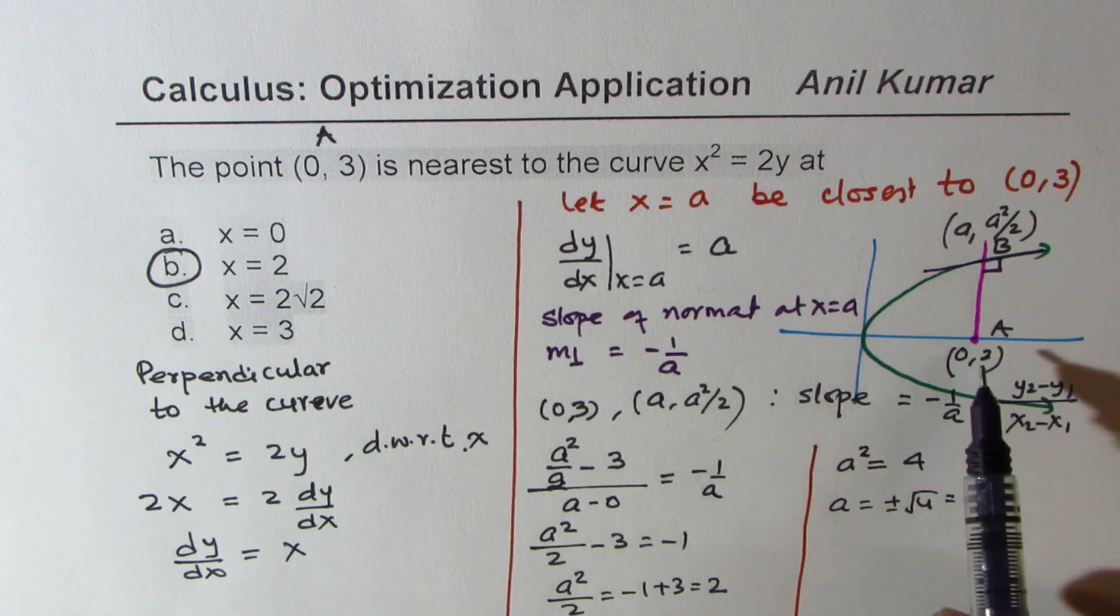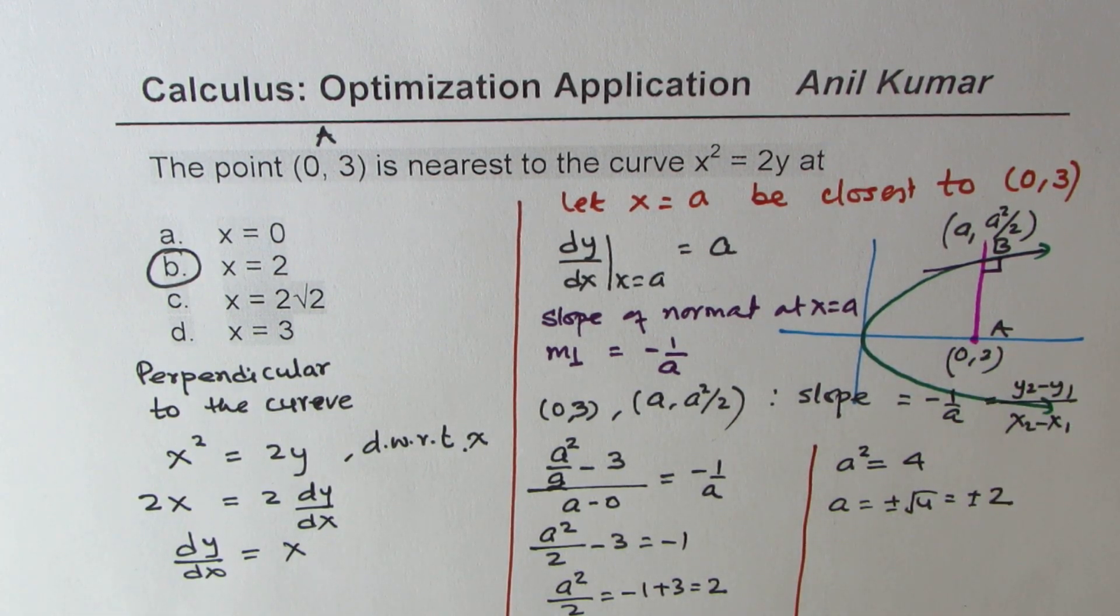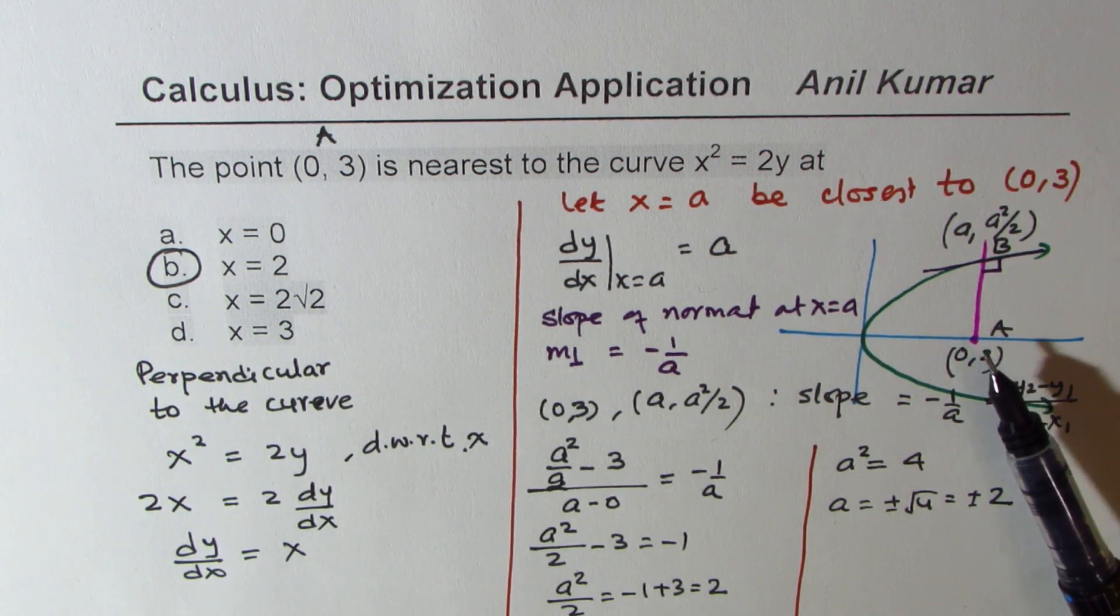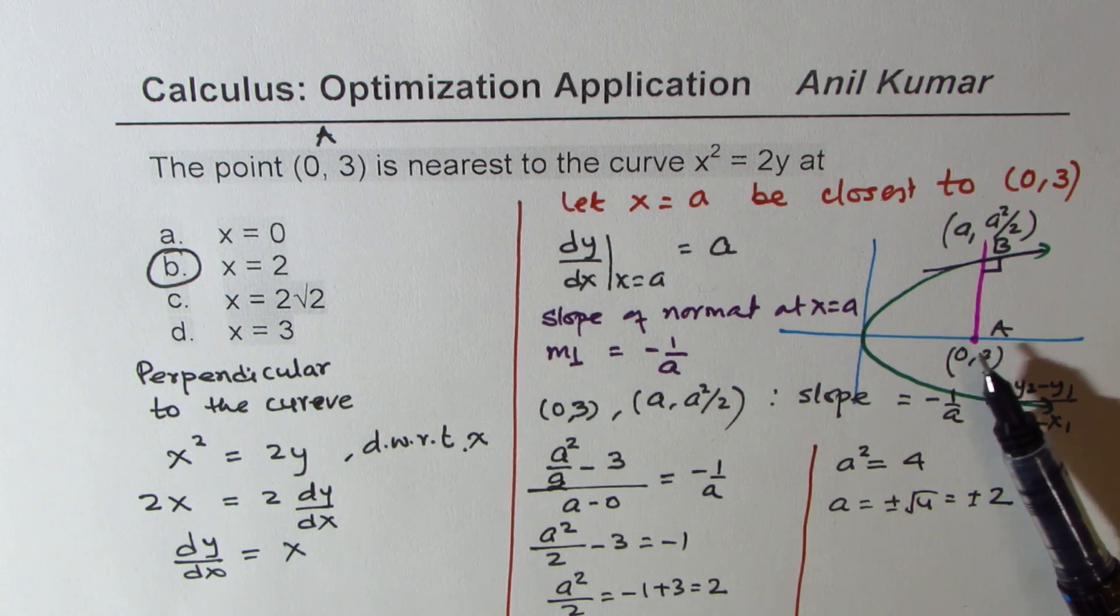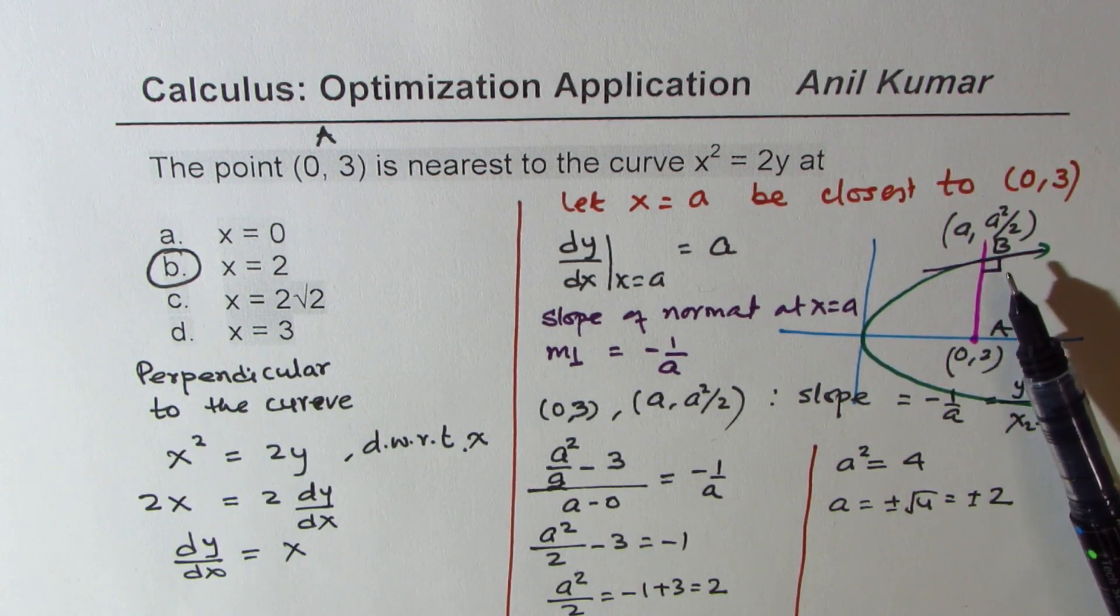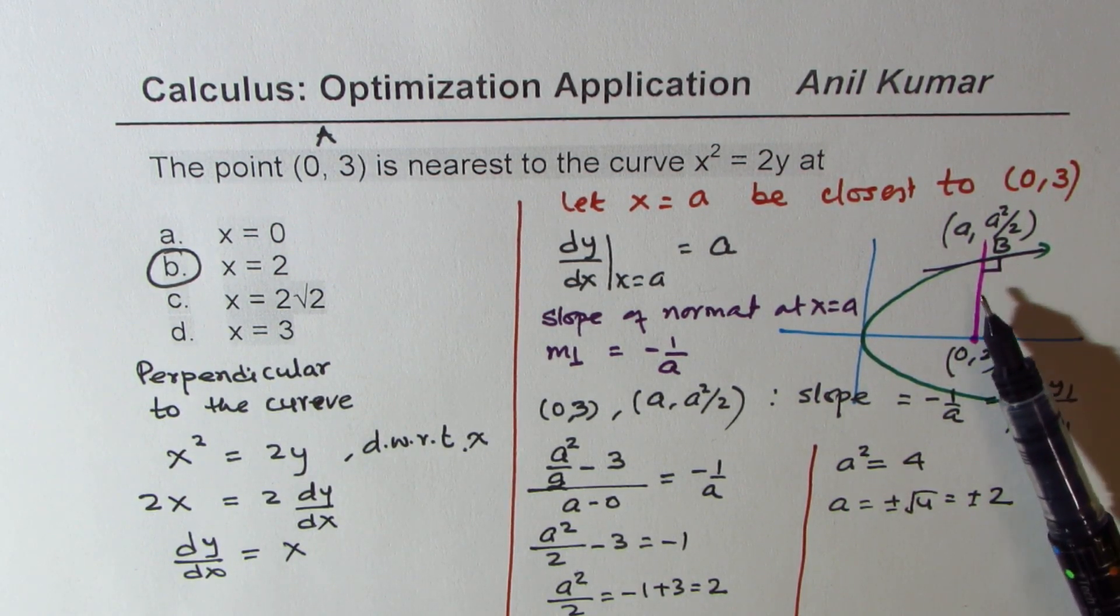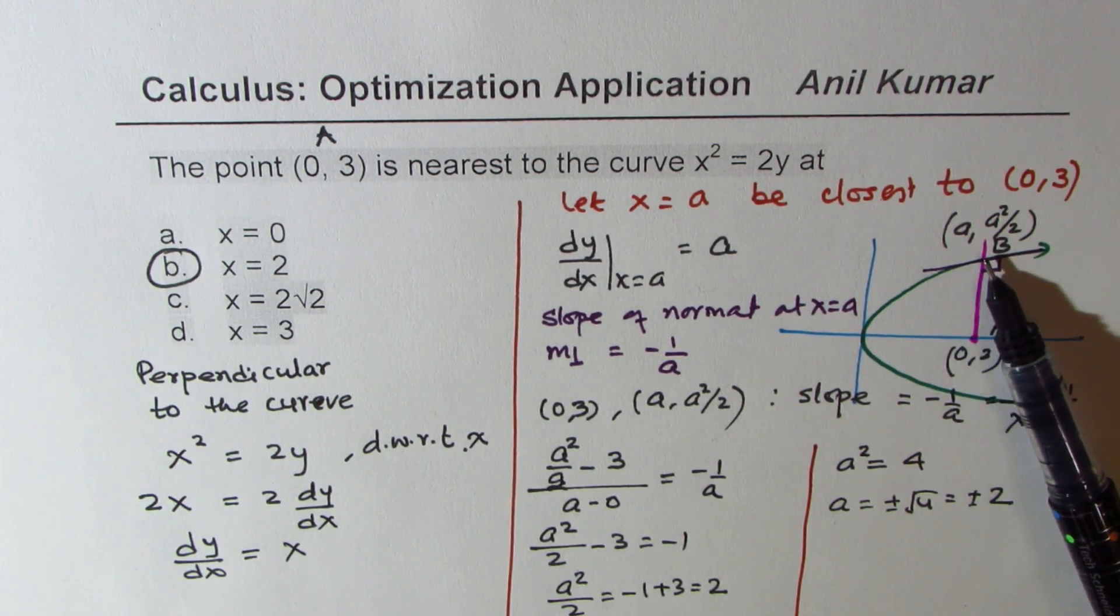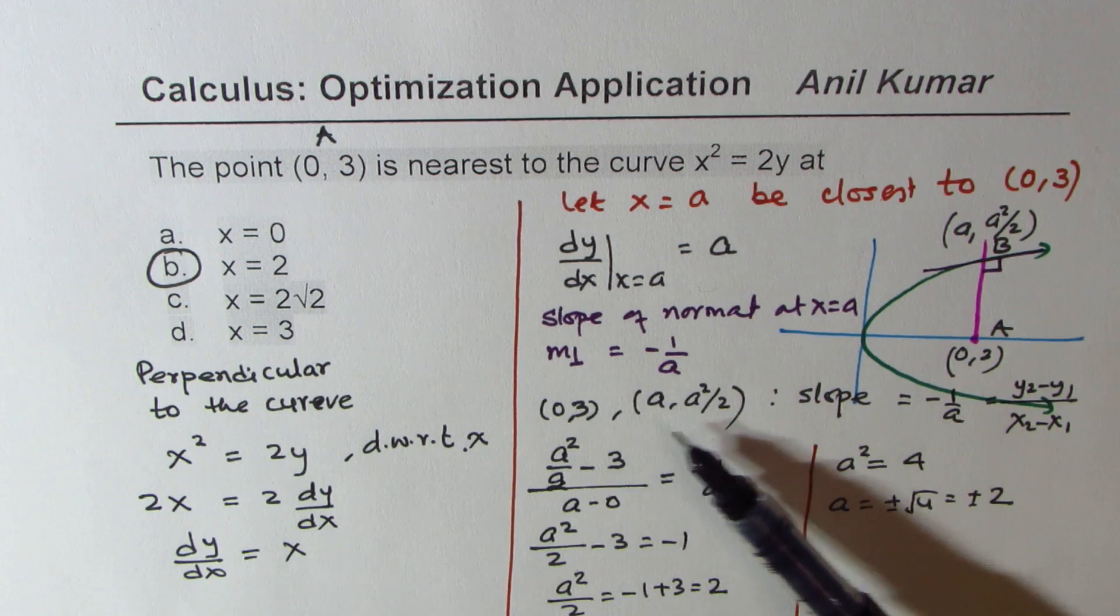So I hope you understand the concept. If you're looking for the closest point from an external point, this is how you do it. You need to calculate the slope of the normal by first finding the slope of the tangent, as we have done.